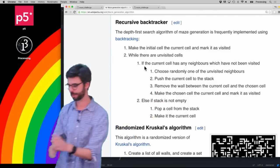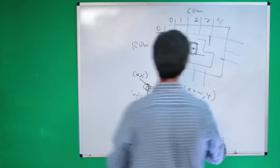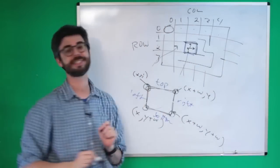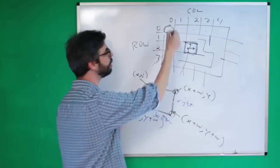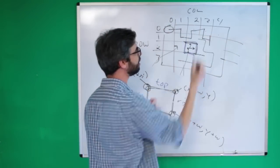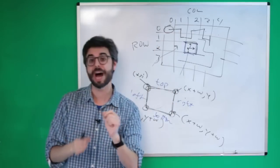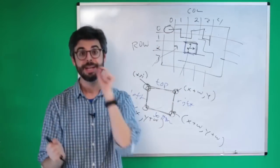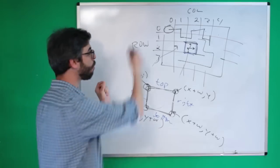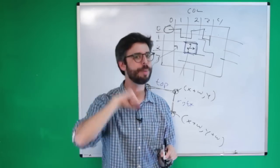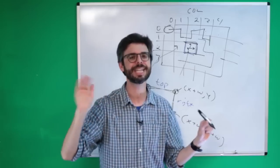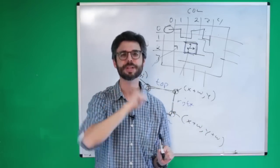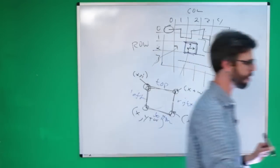This is a really key concept. The program is going to start on a given cell and start walking around the cells, deciding whether or not to remove a wall or keep it. As it walks around, it should never go back and visit a cell it's already been at, so we need a variable to track whether a cell has been visited.